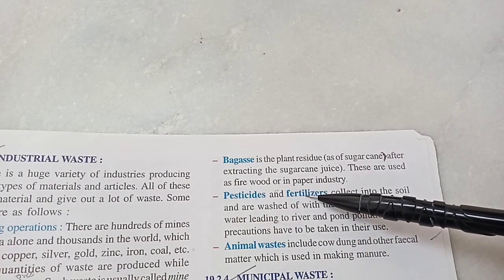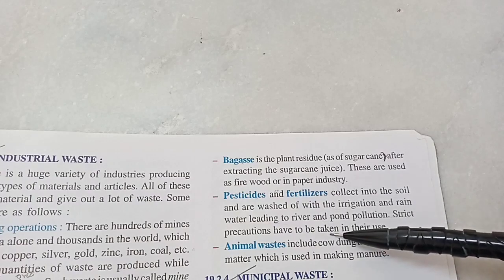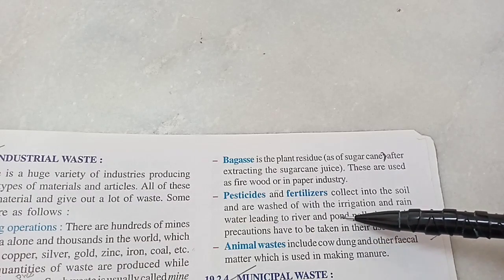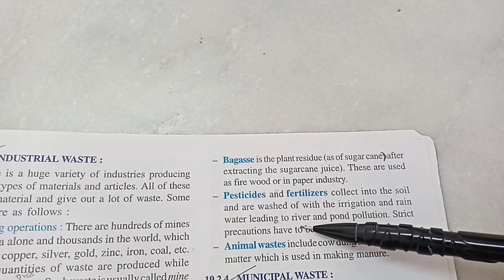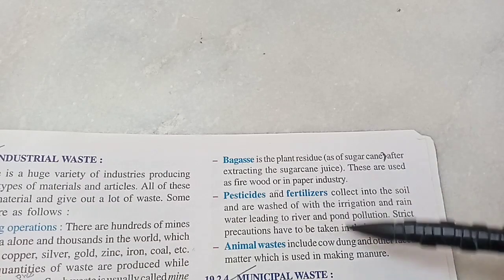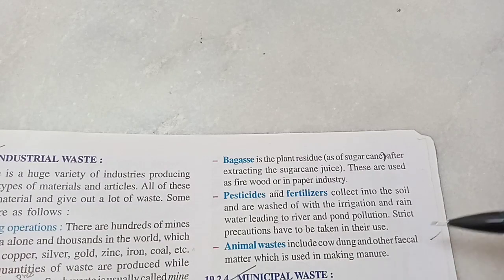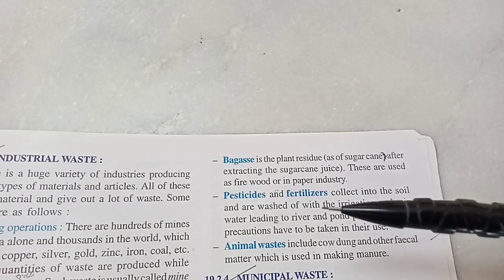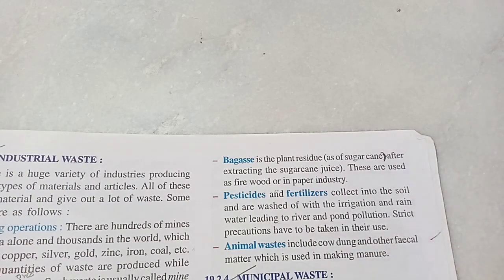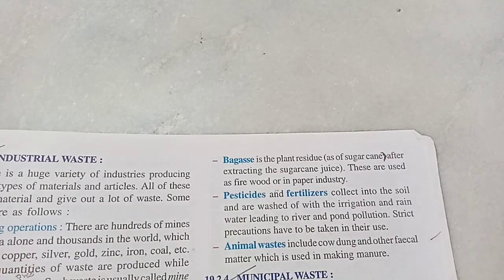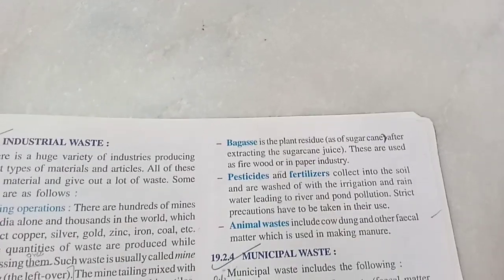Pesticides and fertilizers, which are chemicals used by farmers, are harmful for the soil and may even pollute nearby rivers and ponds as they get washed away. Animal wastes include cow dung, etc. But we can use manure from it. It can also be used for exterior and interior decoration of houses — cakes of cow dung stuck to the walls, which is a type of traditional art.